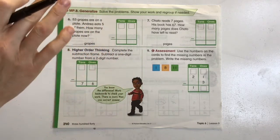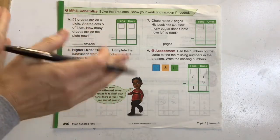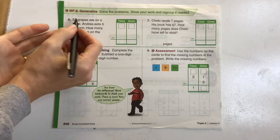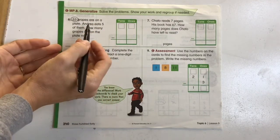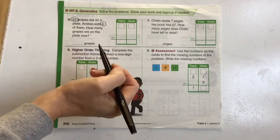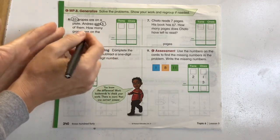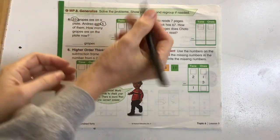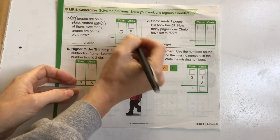I like to have them circle all of the numbers in a word problem and then go through and figure out which ones we actually need. So if 53 grapes are on a plate, Andrea eats 5 of them, how many grapes are left now? So if she eats 5 of them and how many are left on the plate now lets us know that we're subtracting.